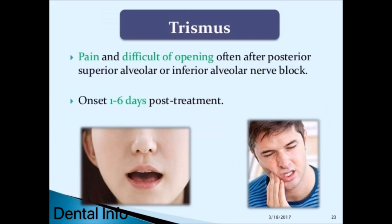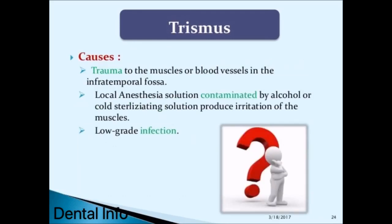Trismus involves pain and difficulty of opening, often after posterior superior alveolar or inferior alveolar nerve block, with onset one to six days post-treatment. Causes include trauma to the muscles or blood vessels in the infratemporal fossa, local anesthesia solution contaminated by alcohol or cold sterilizing solution producing irritation of the muscles, and low-grade infection.